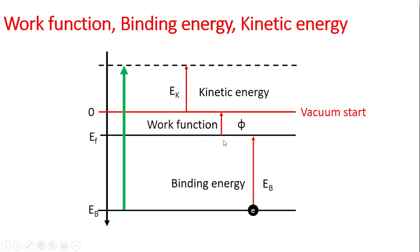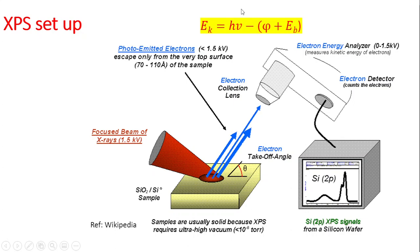The equation used for XPS is: Ek = hν - (φ + Eb), where Ek is kinetic energy, hν is the energy of the incident X-ray, φ is the work function, and Eb is the binding energy.